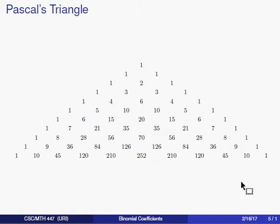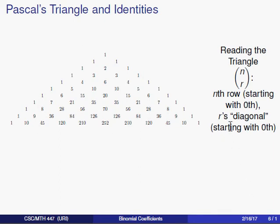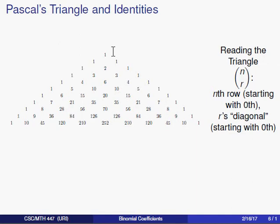We can take the binomial coefficients and identify them with certain locations in the triangle. In particular, n choose r is located on the nth row along the rth diagonal. The rows are numbered beginning with the 0th row at the top. The diagonals are measured in a northeast-to-southwest direction, slanting downward and to the left, and are called diagonal 0, diagonal 1, and so on. So n choose r should be in the nth row and rth diagonal.